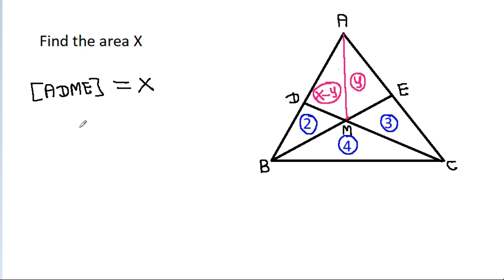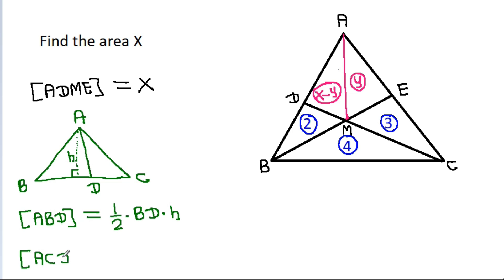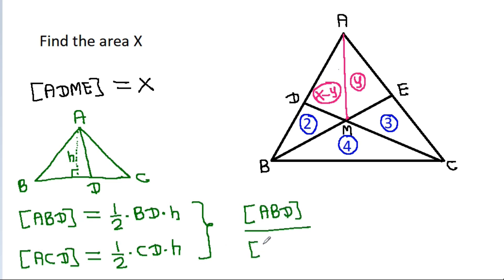In any triangle A, B, C and D: the area of ABD equals one-half times base BD times height H. And the area of ACD equals one-half times base CD times height H. So from these two equations, area of ABD divided by area of ACD equals BD divided by CD.